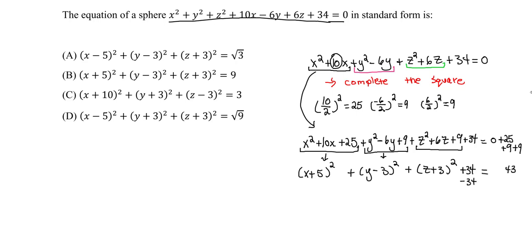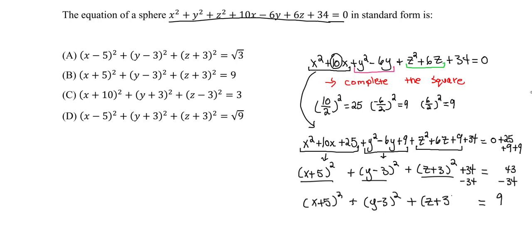Now move the 34 to the other side: 43 minus 34 equals 9. So the final standard form is: x plus 5 squared plus y minus 3 squared plus z plus 3 squared equals 9. Looking at the answer choices, that's answer B. That's all — you're completing the square. Let me know if you have questions. Please subscribe, like, and thank you.